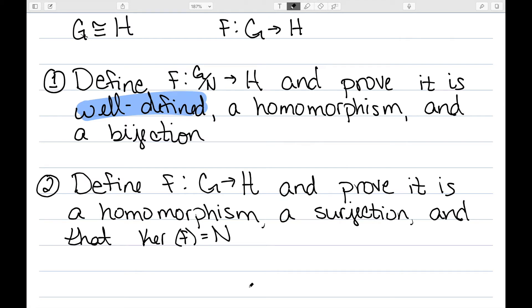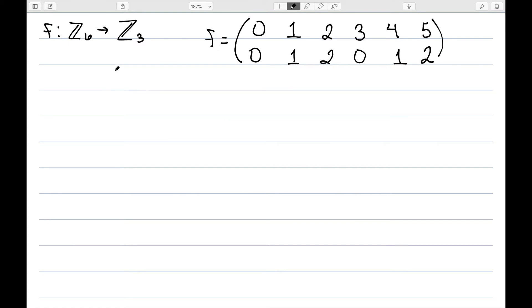So let's start looking at some examples of this. Let's consider the function F going from Z6 to Z3 given by this function here. So 0 goes to 0, 1 goes to 1, 2 goes to 2, 3 goes to 0, 4 goes to 1, and 5 goes to 2.